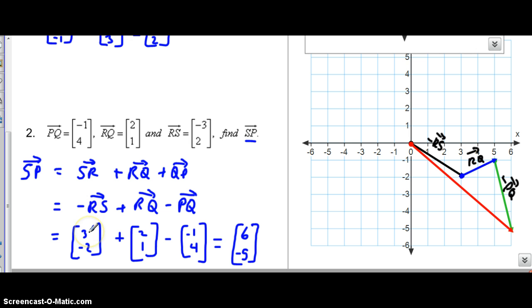I'm going to go ahead and first start with making this negative RS because we want SR. So I just multiply negative 1 by both X and the Y component. Negative 3 times negative 1 is positive 3 and 2 times negative 1 is negative 2. Then RQ is the same vector. And then we're going to subtract our PQ. Then we just add the X component: 3 plus 2 minus a negative 1 and that would be 6. For our Y component we have negative 2 plus 1 minus 4 which would result in negative 5.